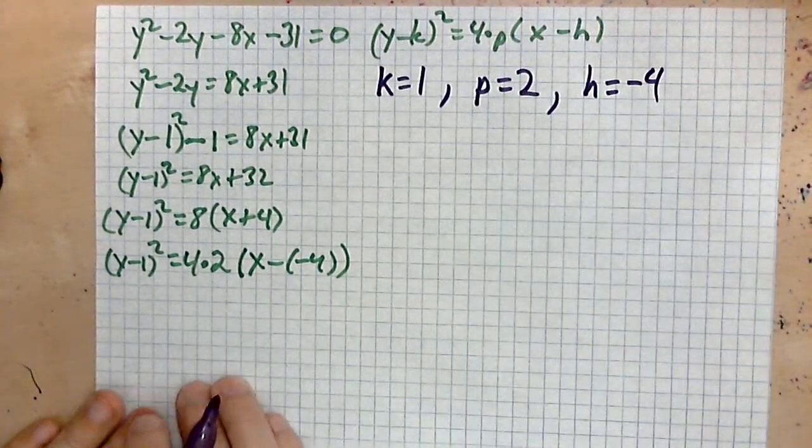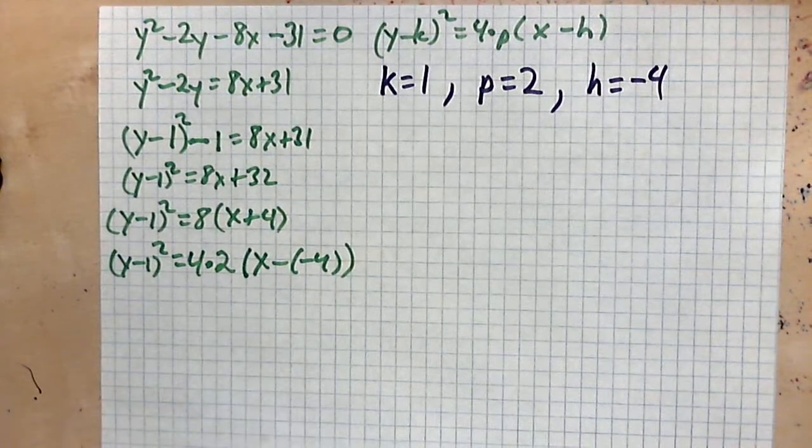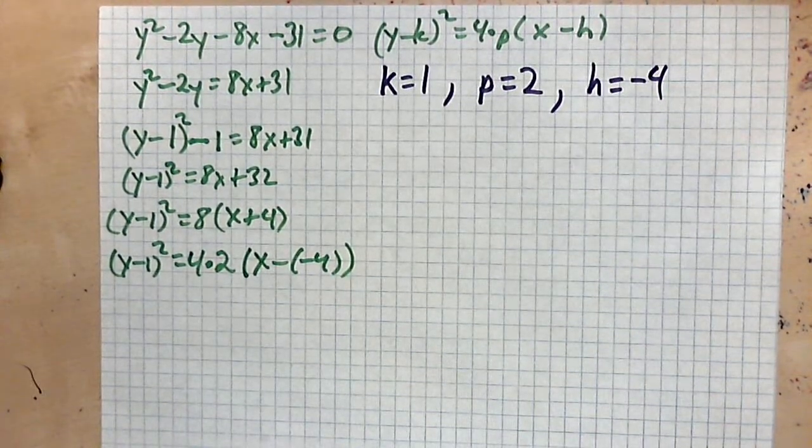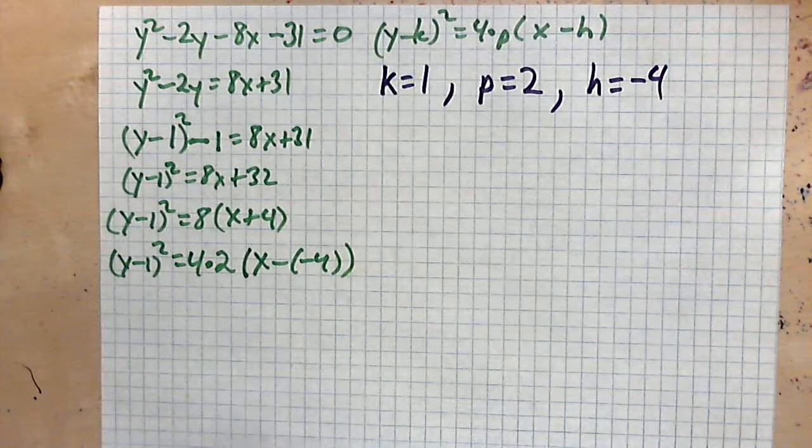These are the key pieces of information, and with these we can find the vertex, focus, and directrix. So let's take a look at how you find those. The vertex will be